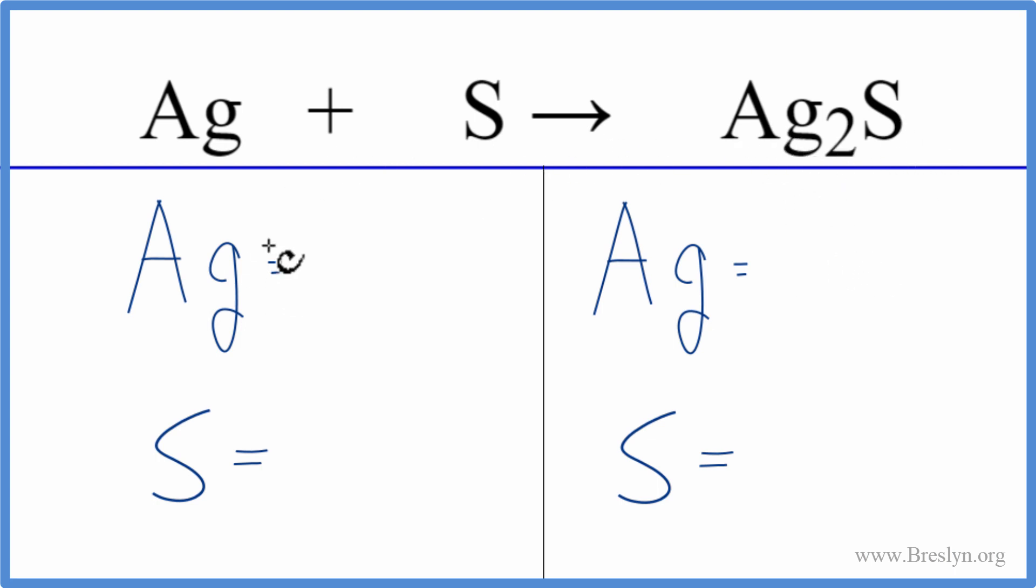So let's balance the equation by counting the atoms up on each side of the equation. We have one silver, one sulfur. On the product side, we have two silvers and then one sulfur atom.